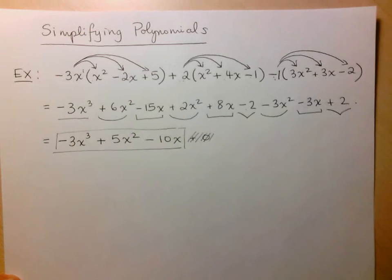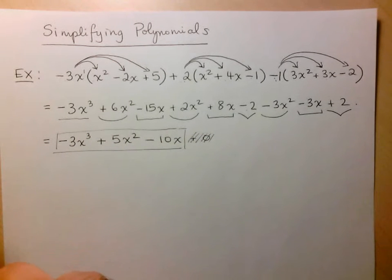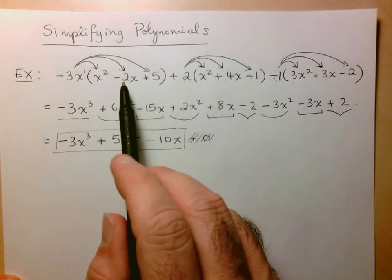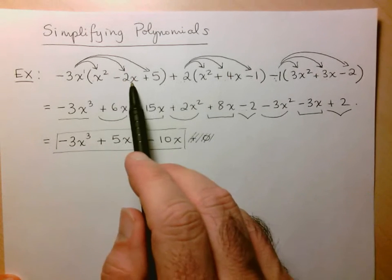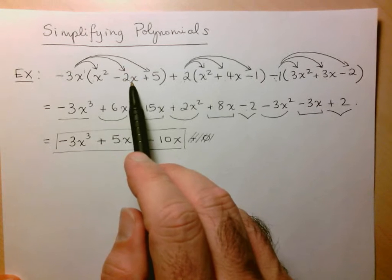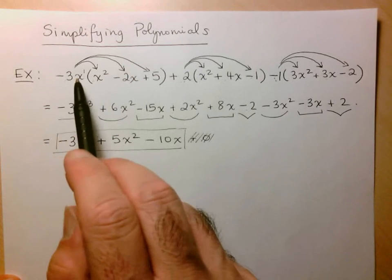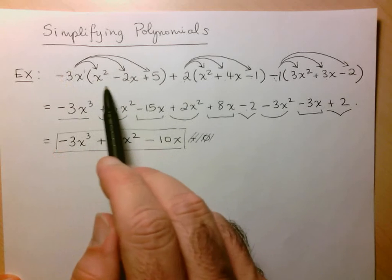So just to recap, when you're simplifying these more complex polynomials, step 1 is look at anything in brackets. Can it be simplified? If yes, do so. If not, move on. Look for any powers of these monomials or polynomials.